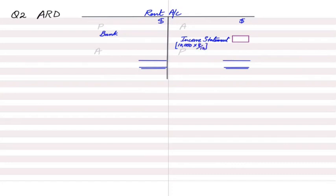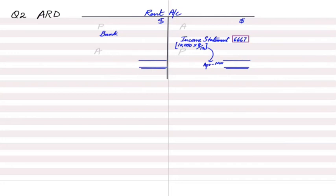Dividing £10,000 by 12 months gives a monthly rent of £833. Multiplying by eight months gives £6,667 — the rent charged in the income statement for this year. We only charge eight months out of twelve because we used the premises for only eight months this year.